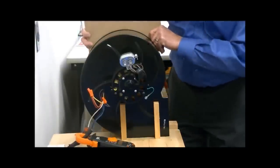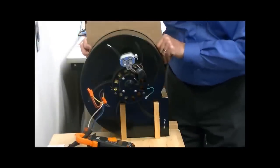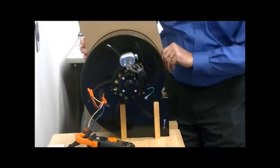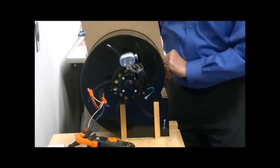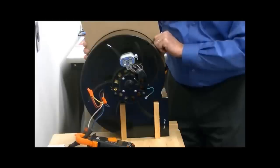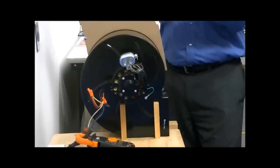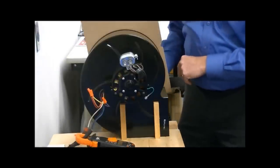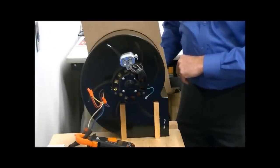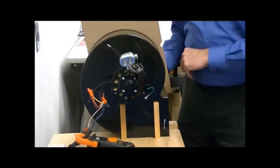As I add restriction, the amps drop. With half of the inlet blocked, the motor operates at 2.5 amps. With the entire inlet blocked, the motor operates at 2.3 amps.